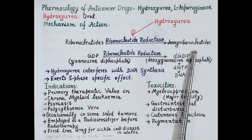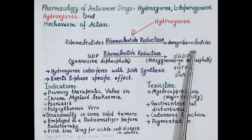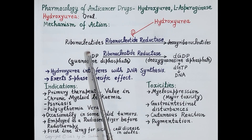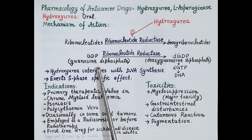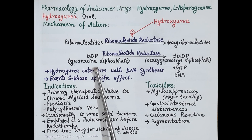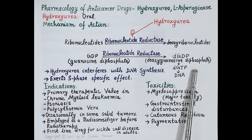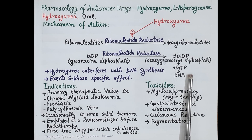Nucleotides that form DNA consist of deoxyribose sugar, so deoxyribonucleotides are the building blocks of DNA. The enzyme ribonucleotide reductase converts ribonucleotides to deoxyribonucleotides. For example, GDP (guanosine diphosphate), a ribonucleotide, is converted by ribonucleotide reductase to deoxyguanosine diphosphate (deoxy-GDP), which is further phosphorylated to deoxyguanosine triphosphate.